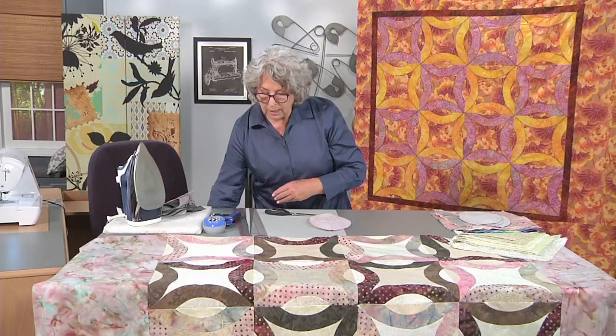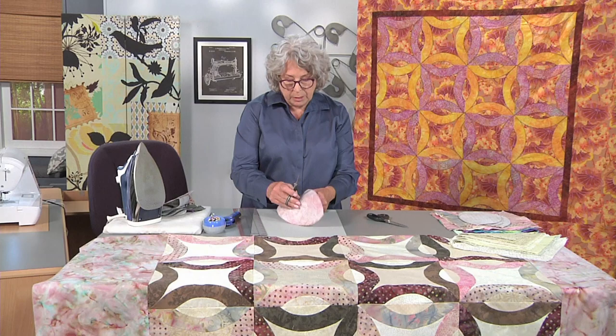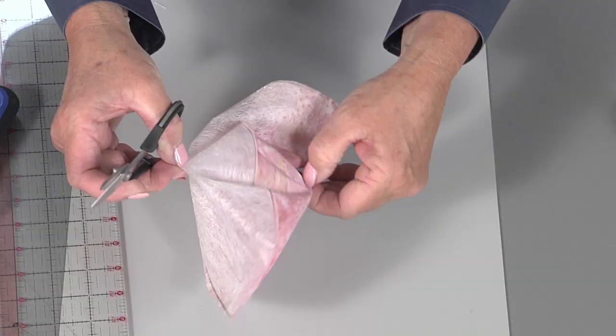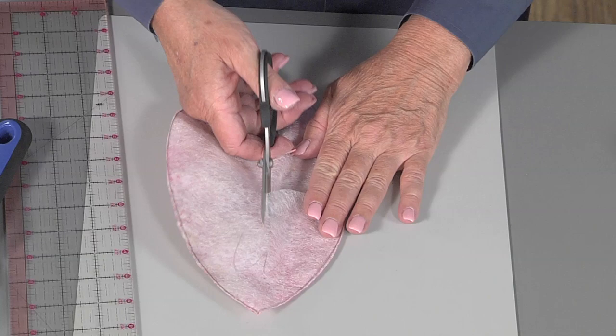Once that's cut, now we have to flip it right side out. So now, this is another one of the only times you have to be careful. Kind of pull it, make a hole with your nice, sharp scissors, and then just make a slit. It doesn't have to be very big, just big enough to get your hands in there. Now we're going to turn it right side out.